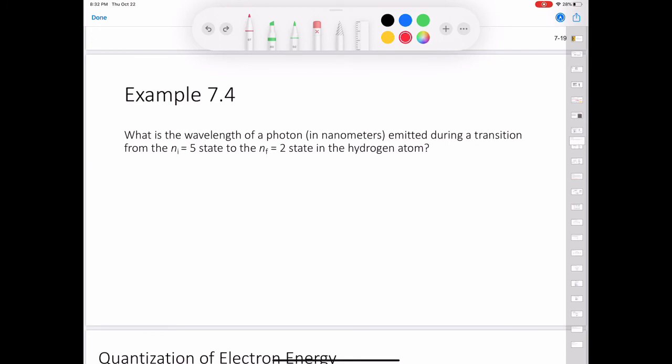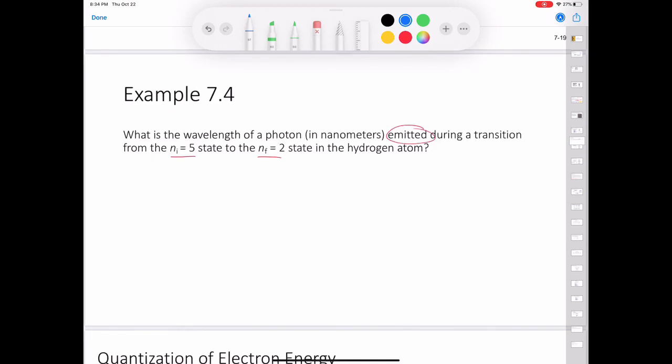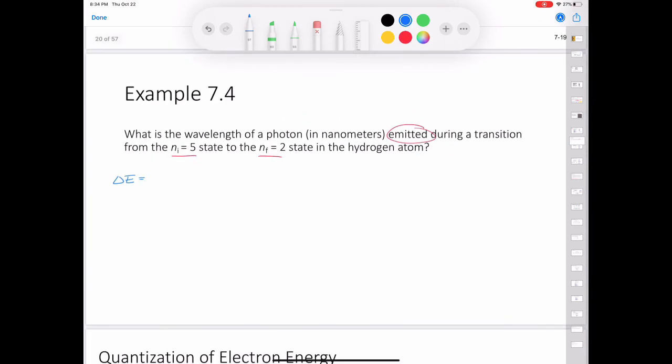Example 7.4. What is the wavelength of a photon in nanometers emitted during a transition from the n initial is equal to 5 to the n final is equal to 2 state in the hydrogen atom? So this is an emission spectrum. So let's start by calculating the amount of energy emitted by this photon. So we'll use the equation delta E is equal to the Rydberg constant multiplied by 1 over n initial squared, subtract 1 over n final squared.